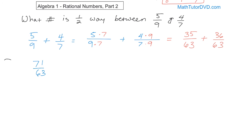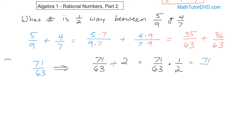That's what you get when you add both fractions together, but that's not the middle yet — you still need to divide by 2. Take 71 over 63 and divide by 2. Change the division into multiplication and flip the second fraction to get one half. So you get 71 over 63 times 1 half. 1 times 71 on top is 71, and 63 times 2 on the bottom is 126. The answer is 71 over 126. You can't simplify that further.